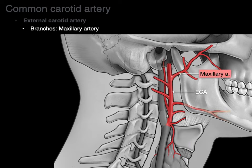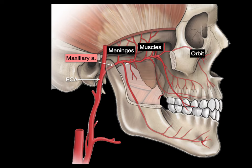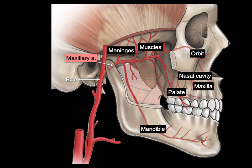Next is the maxillary artery — a large and important branch of the external carotid located in the infratemporal fossa. It supplies the meninges through the middle meningeal artery, muscles including the deep temporal (temporalis), masseter via the masseteric branch, and the pterygoids. It also supplies the orbit through the inferior orbital artery, the nasal cavity, the maxilla and maxillary teeth and gums, the palate, and the mandibular teeth, gums, and skin. It is a very important artery.